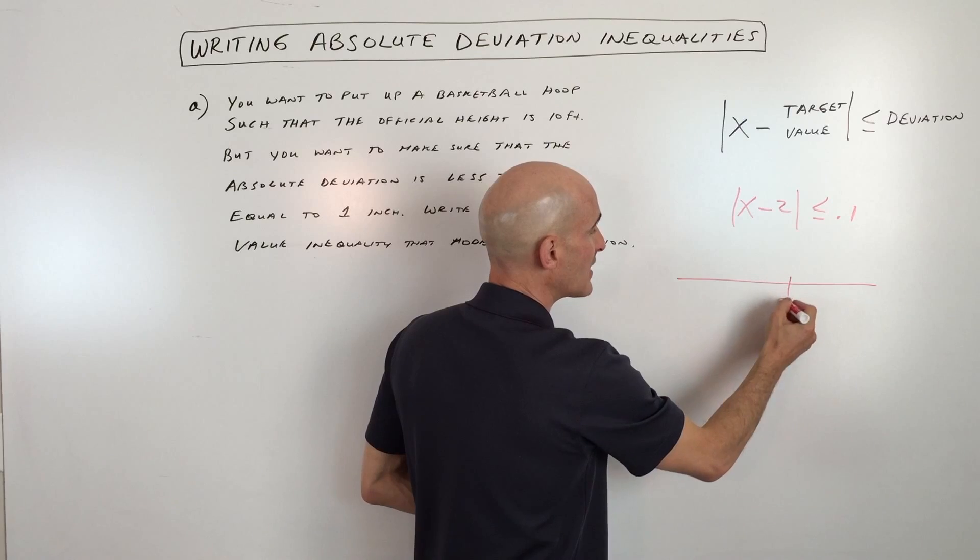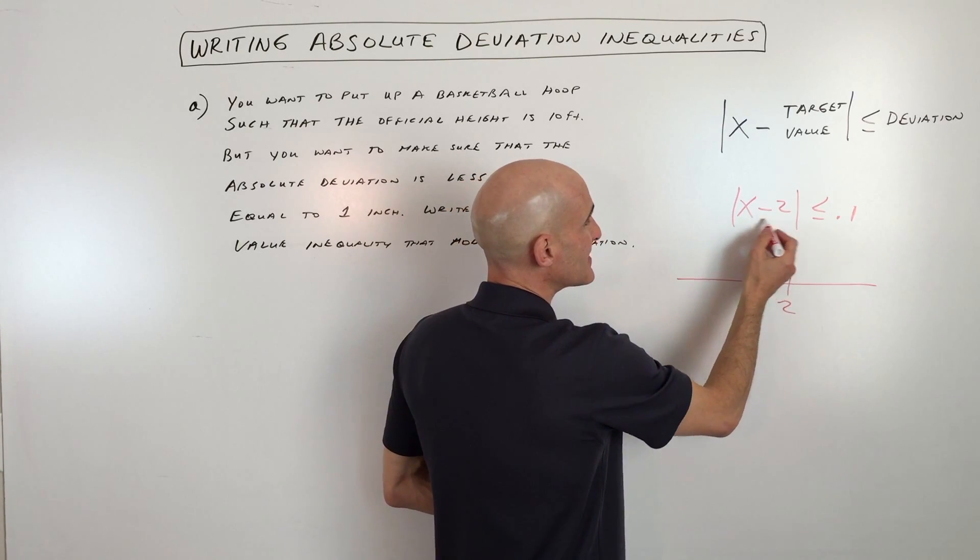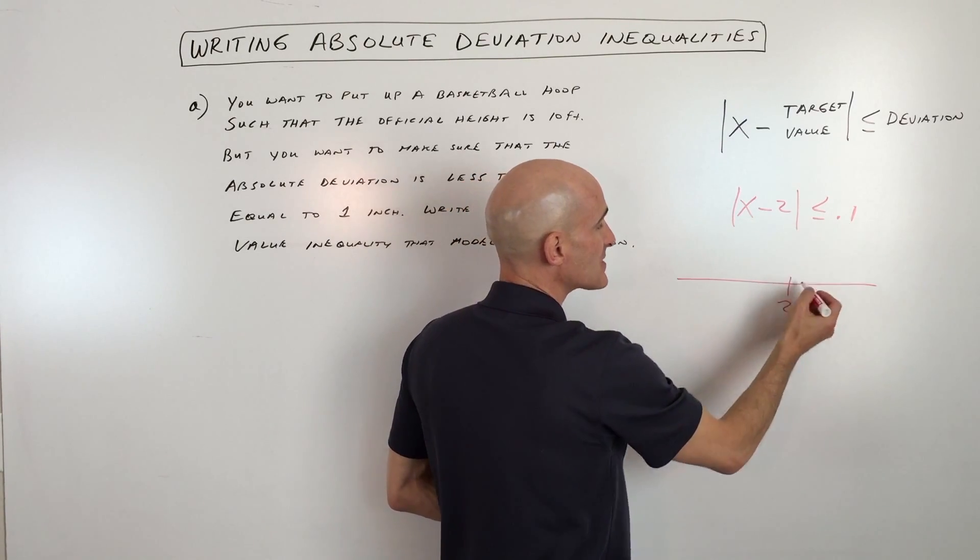Now if we graph this on the number line, here's two, right? And you can see that that difference or that distance has to be less than or equal to 0.1.